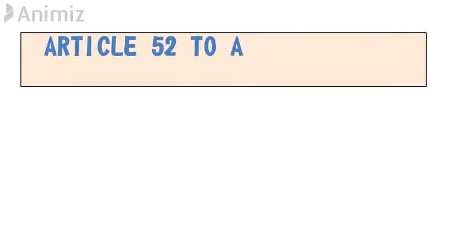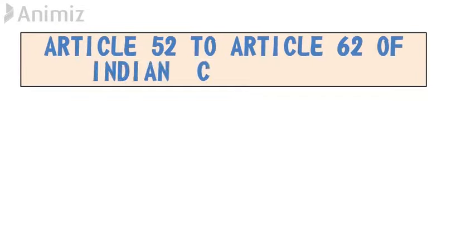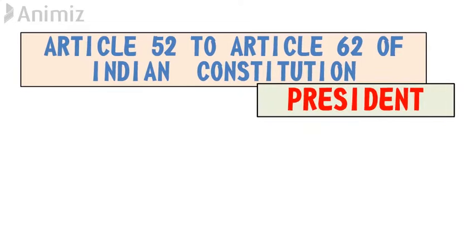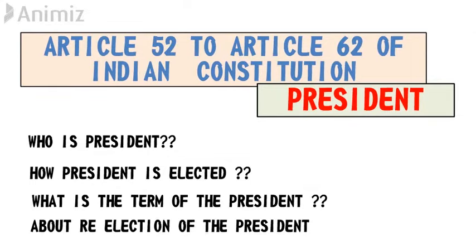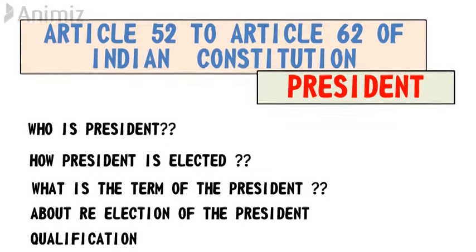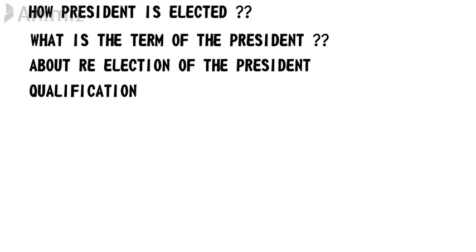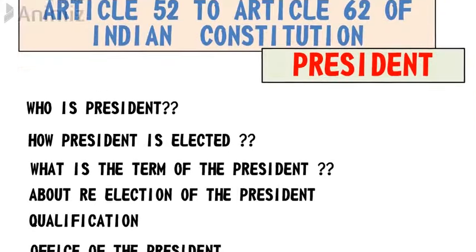Hey everybody, welcome back to my channel. In this video we will be discussing Article 52 to Article 62 of the Indian Constitution, which talks about the term 'President' — that is, who is the President, how he is elected, what is the term of the President, what about re-election, what are the qualifications for becoming President, about the office of the President, and about the oath of the President. We will be discussing each of these topics one by one.